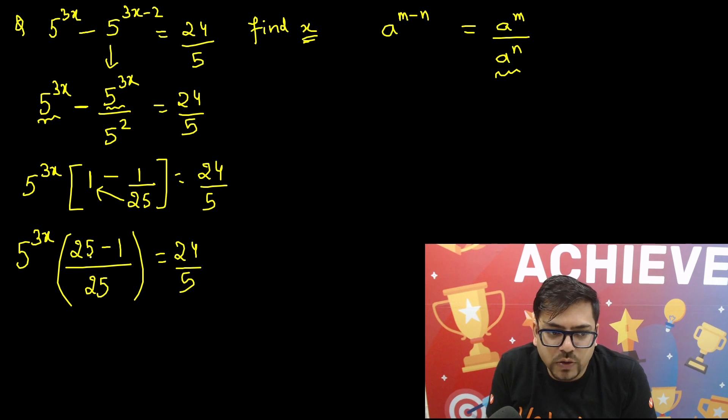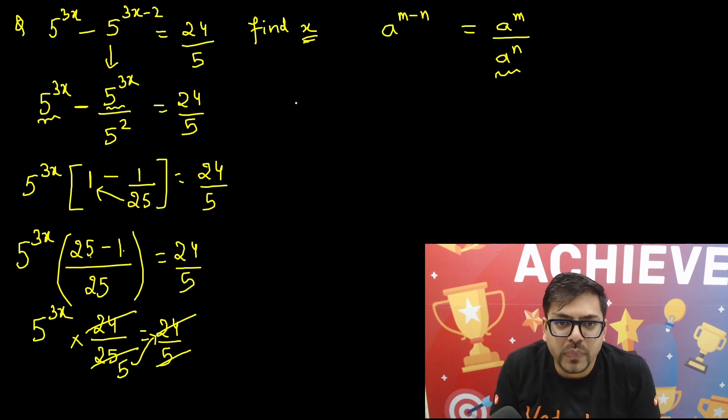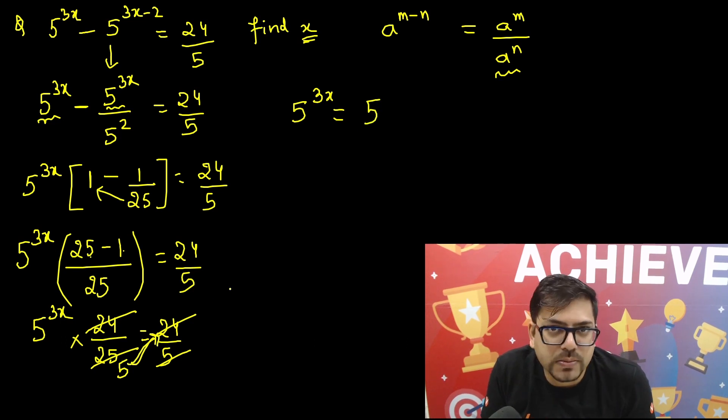Now very easily, 25 minus 1 you are able to see that this is 24. Here this is 25 equals to 24 by 5, and that is multiplied with 5 raised to power 3x. So 24 and 24 gets cancelled. 5 will cancel this 25 in 5 times, and this 5 will go in the right hand side. So we have 5 raised to power 3x equals 5, because this 5 goes to right hand side with a cross multiplication.